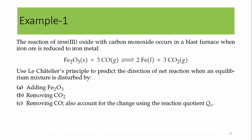Now here is an example I will also ask in the examination. Given this reaction, using Le Chatelier's principle, predict the direction of equilibrium shift when: adding Fe₂O₃, removing carbon dioxide, or removing carbon monoxide. These are the reactants and products given. Let's solve one by one.